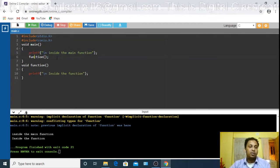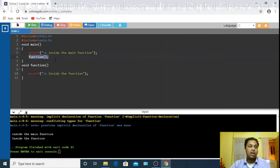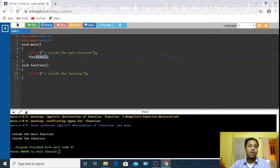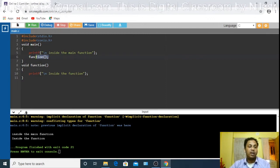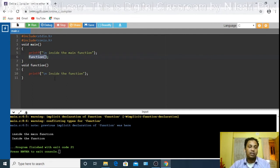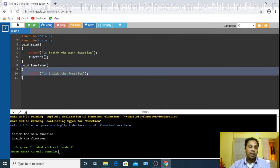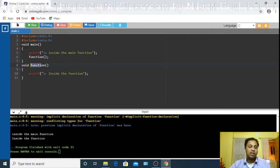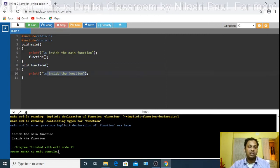And after that, we have used a function. We call a function. We cannot define a function within this main function. Because we cannot define a function within a function. And that is why we define this function outside this main function. What is the use of this function? The use of this function is just to print this inside the function statement.